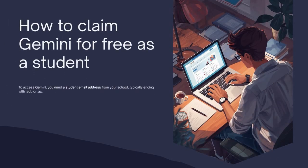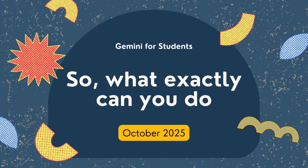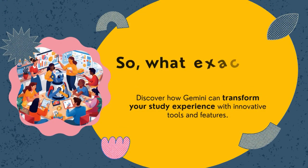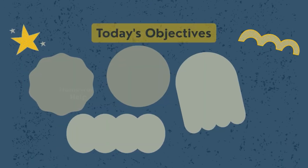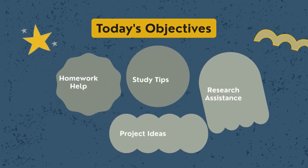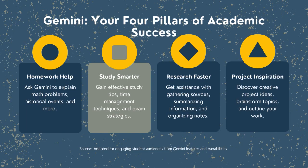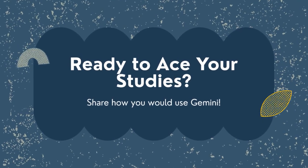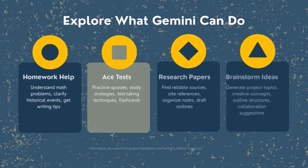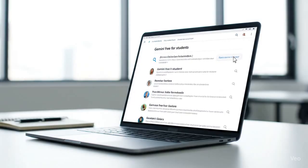So, what exactly can you do with Gemini as a student? Let's break it down. Homework help — ask Gemini to explain math problems, historical events, or scientific concepts in simple words. Essay writing with outlines, structure, and even citation help. Presentations — generate slide titles and summaries for class presentations. Research support — summarize academic papers or articles. Coding projects — if you're a computer science student, Gemini can help debug code or explain algorithms. Basically, Gemini can cut hours of work into minutes.